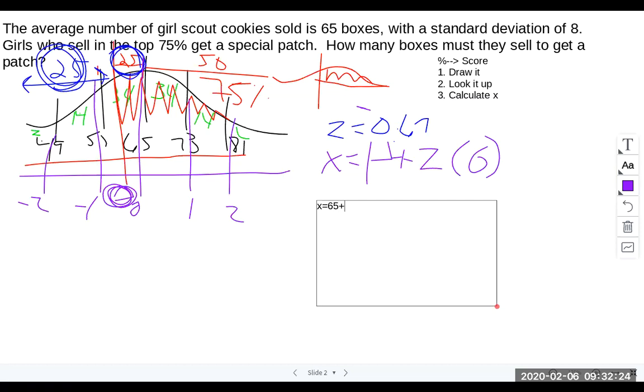Then I'm going to add my z-score. Now remember my z-score is a negative number. So it's going to be a negative 0.67. So don't leave that negative part out because it would change our answer. Then I'm going to multiply that times our standard deviation. So let's go ahead and do that math.